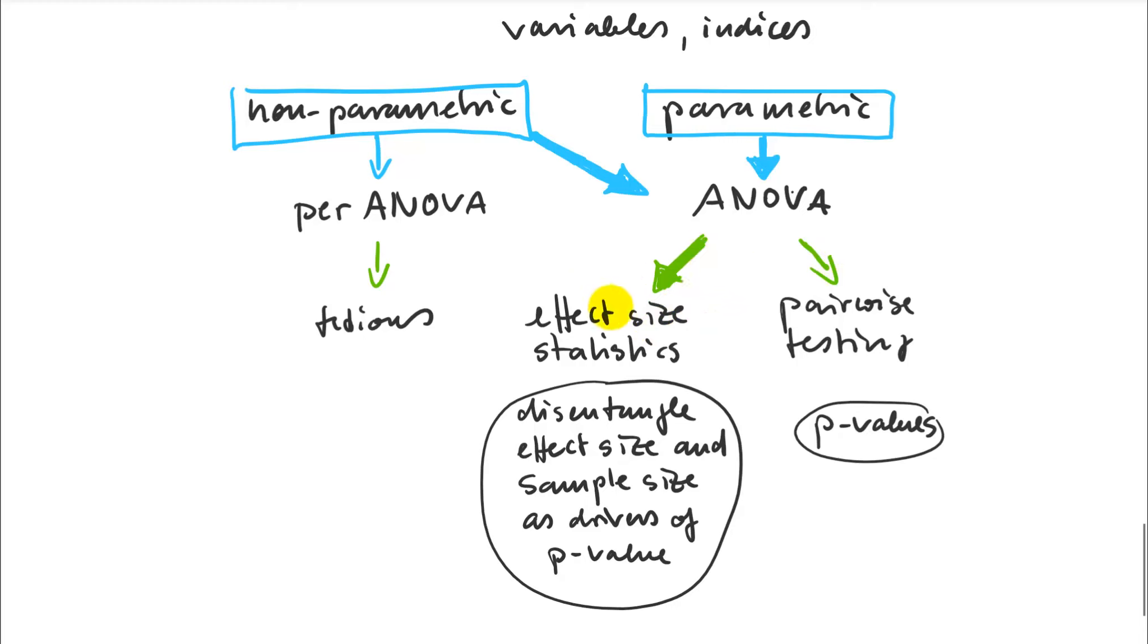What this differentiates from the pairwise testing is that I actually disentangle the effect size and the sample size as causes of my p-value. Usually you don't just want to know whether two treatments are significantly different, but by how much. That's key information. In the lab I have some examples on how to do this.